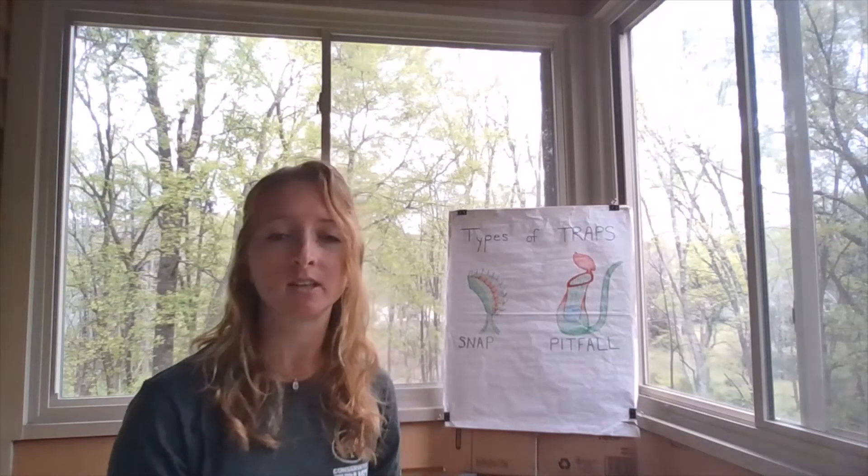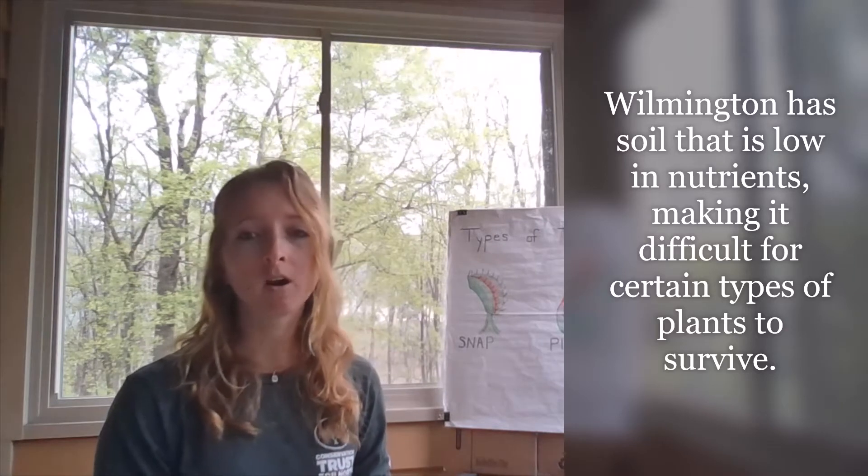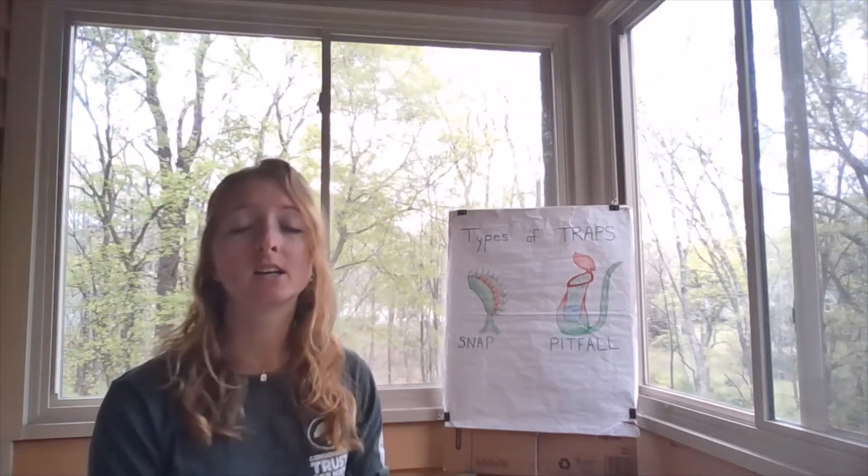So what are some of the unique factors in Wilmington's ecosystem that make it just right for Venus flytraps? One factor is the soil. Our soil here in Wilmington is very low in nutrients. A Venus flytrap is found in spongy, nutrient-poor soils such as in coastal swamps and wet savannas. The type of soil is acidic and infertile, but the Venus flytrap is particularly adapted to this environment where other plants could not grow.